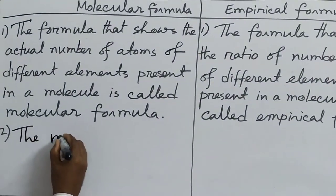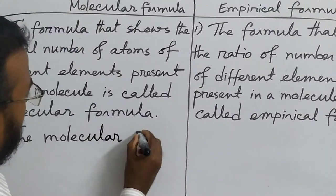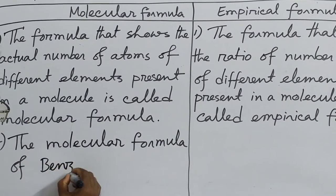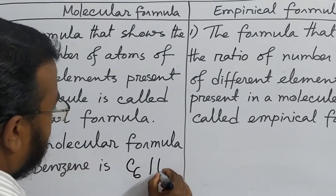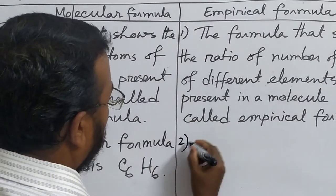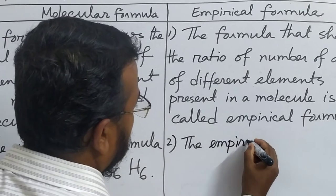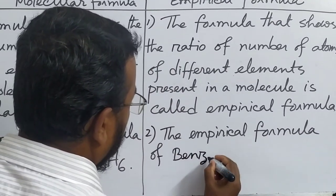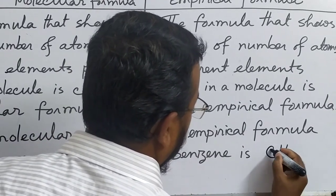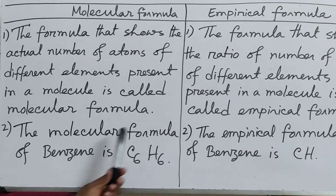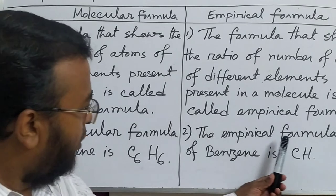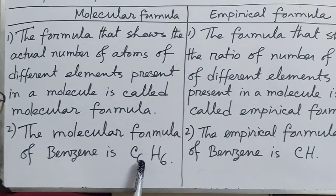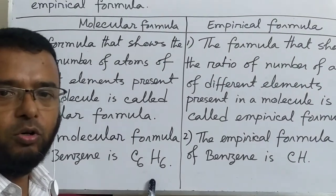The second difference: the molecular formula of benzene is C6H6. The empirical formula of benzene is CH — that means carbon is 1 and hydrogen is also 1. The molecular formula shows the exact actual number of carbon and hydrogen atoms, whereas the empirical formula shows only the simplest ratio.